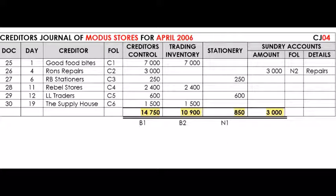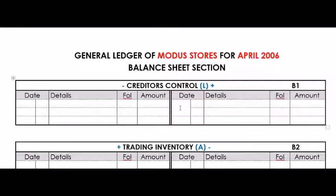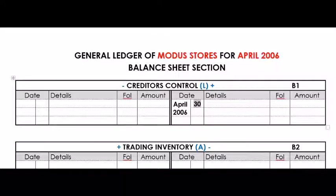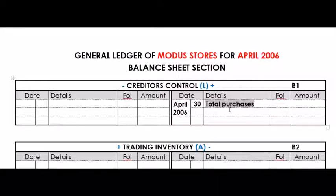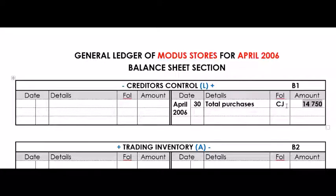Let's post Creditors Control first. On the credit side of Creditors Control, write April 2006. The date is the 30th because it's a column total, and 30 is the last day in April. The details will be 'total purchases' — we can't say 'total payments' because we haven't paid yet, but we have purchased many different things. The journal reference in the folio column is CJ, and the value was 14,750 Rand.